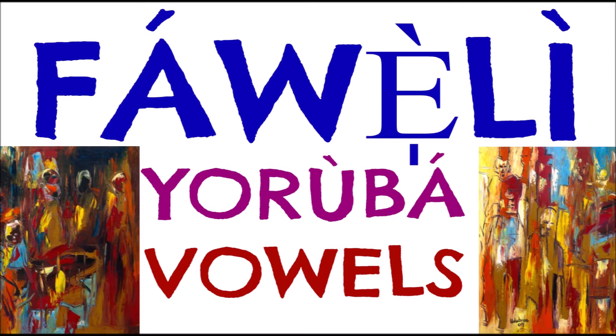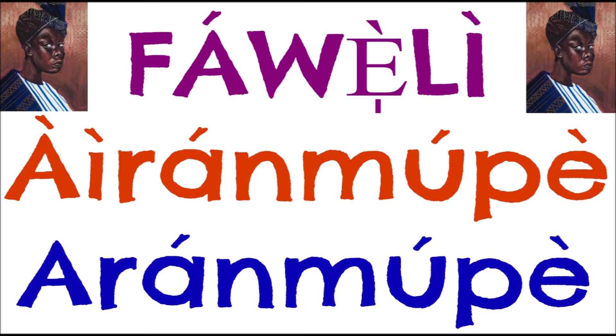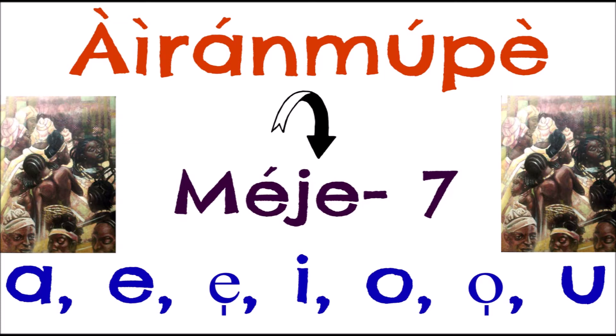We have two types of vowels in Yoruba: we have the aeromupe Faweli and the aromupe Faweli. What is aeromupe? 'I' in aeromupe means 'to not.' 'Ramu' means to squeeze your nose or make a nasal sound — so aeromupe means you don't squeeze your nose, you don't make a nasal sound to pronounce these vowels.